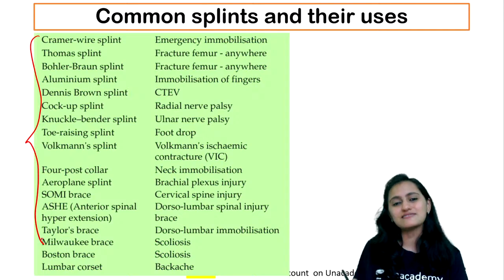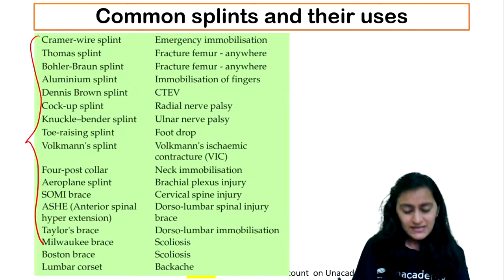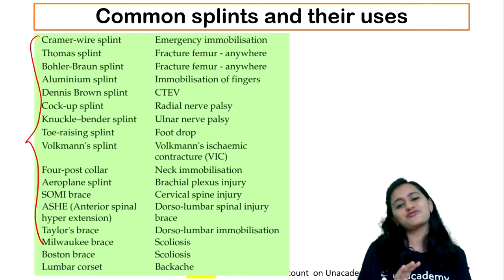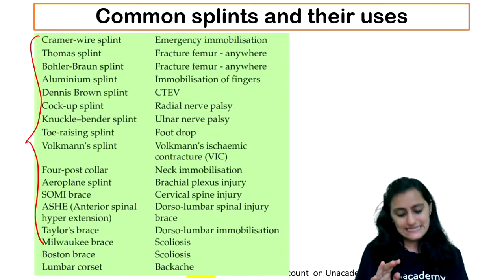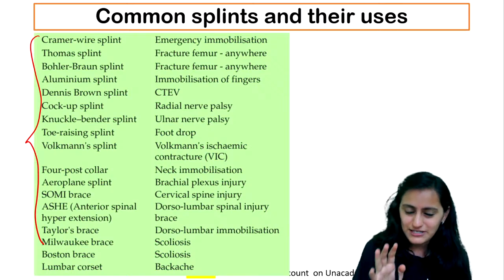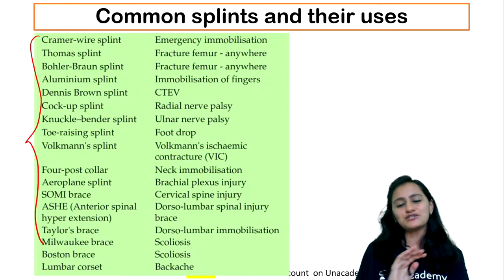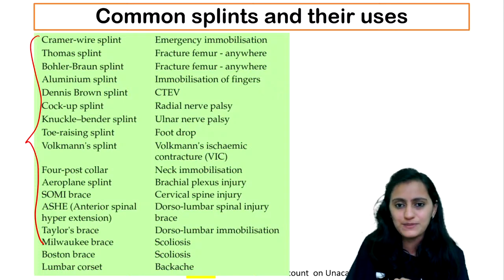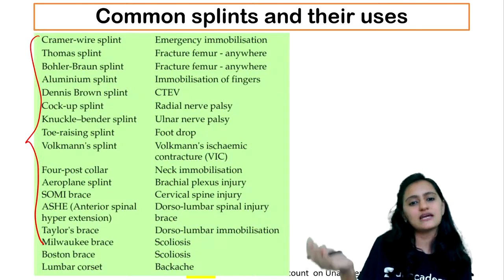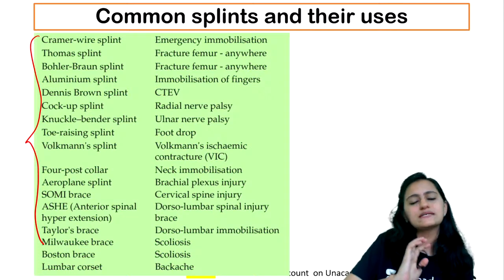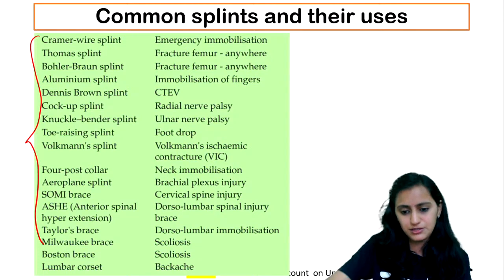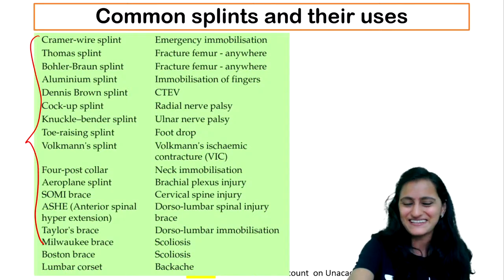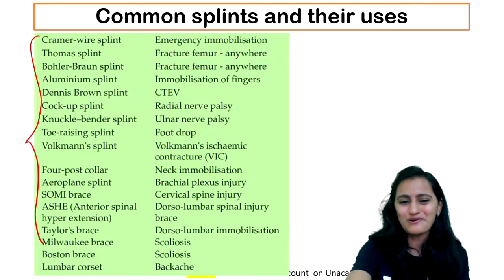We will see this entire list. There are some 17 to 20 splints. When you see this table you get scared, but I'll try my best to make this table as easy as possible for all of you. I assure you that at the end of the session all of you will be very well versed with the splints. There are approximately 20 splints that we would be seeing. We'll see the images also and we'll see how to identify them and where they are used.